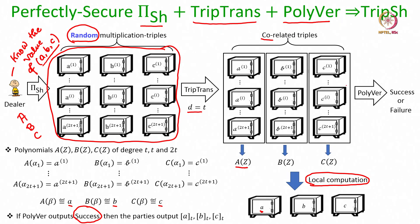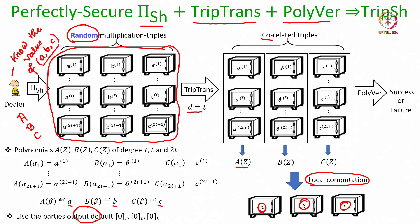Since the A components of all the transformed triplets are secret shared, by applying the same Lagrange interpolation function the parties will get a secret sharing of the A component of the triplet (A, B, C). Similarly, they can obtain a secret sharing of the B component and the C component of the triplet. Whereas if the output of the polynomial verification is failure — and looking ahead, if the output is failure then the dealer is corrupt — the parties safely take a default sharing of the triplet (0, 0, 0) on behalf of the dealer, meaning the parties set output assuming that the dealer wanted to secret share the triplet (0, 0, 0).